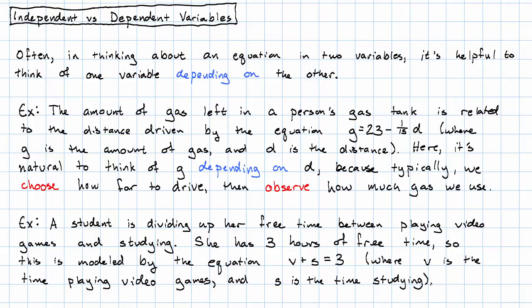Suppose that a student is dividing up her free time between playing video games and studying. She has three hours of free time. So, this is modeled by the equation V plus S equals three, where V is the time playing video games and S is the time studying.